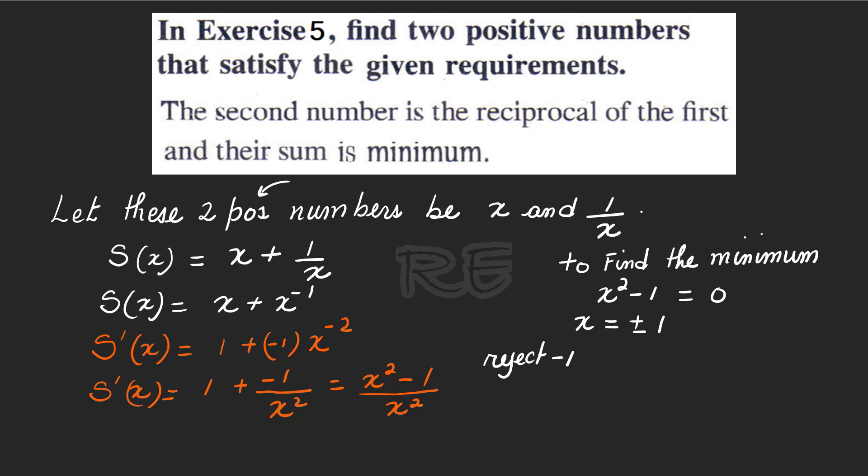Since we're looking for two positive numbers, we're going to reject negative 1. So the value that we're looking for is X equal to 1, which can easily be proven to be a minimum. And those two positive numbers are 1 and 1 over 1, which is 1.